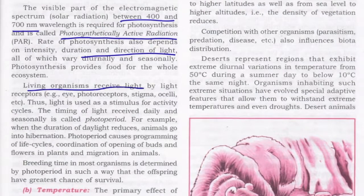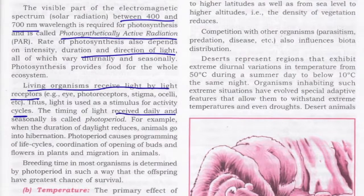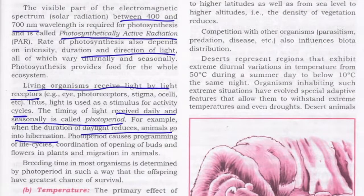Living organisms receive light by light receptors such as eyes, photo receptors, and stigma, and this light is used for stimulus and activity cycles. The timing of light received daily and seasonally is called the photoperiod. For example, when the duration of daylight reduces, animals go into hibernation. Photoperiod causes programming of life cycles, like coordination of the opening of buds and flowers in plants.